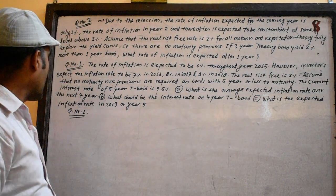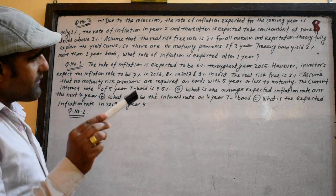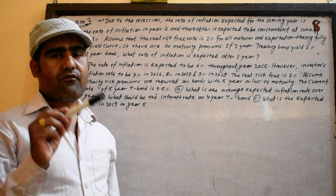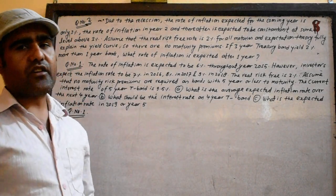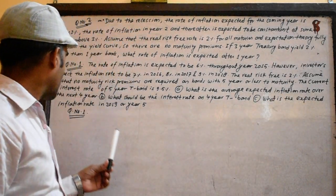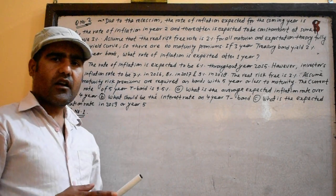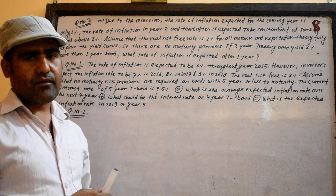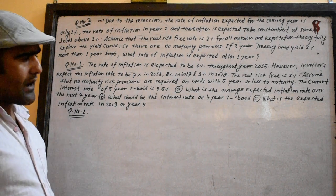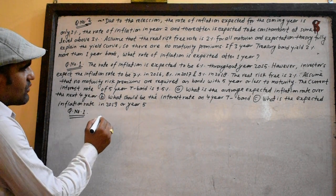As you know, no maturity risk premium is required on bonds with 5 years or less to maturity. The current interest rate on a 5-year bond is 9.5%.